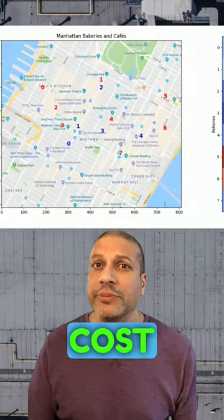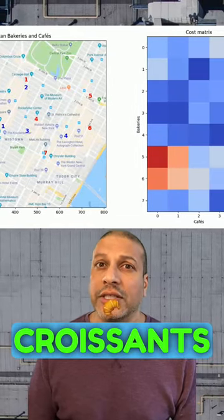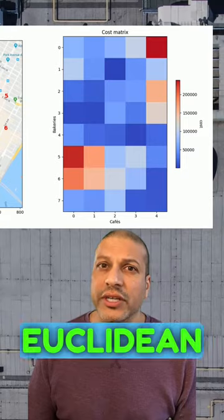The first step is just building a cost matrix between our bakeries and croissants and the distance required. We're just going to use the squared Euclidean distance here.